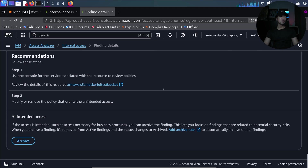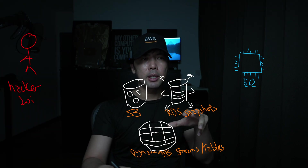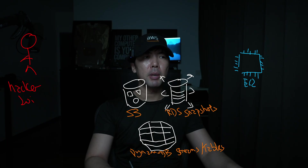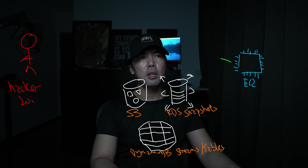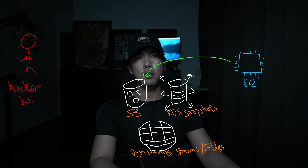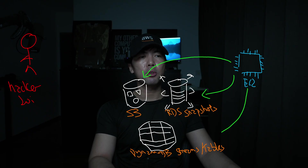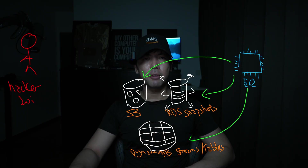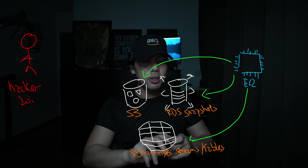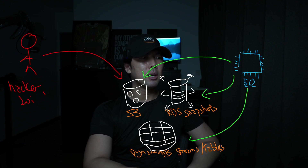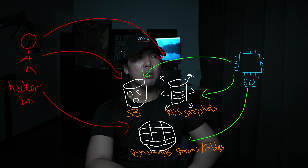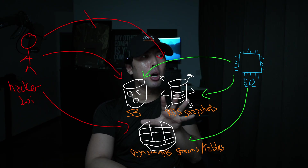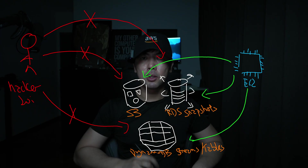Now looking at the architecture: on the right side you have an application hosted on EC2 that has intended access to S3, snapshots, DynamoDB streams or tables, and other services. However, an unintended principal might have been granted permissions to critical resources like the S3 bucket, DynamoDB streams, or RDS snapshots. You want to detect that quickly and block out this direct access — and this is where IAM Access Analyzer internal access comes into play.